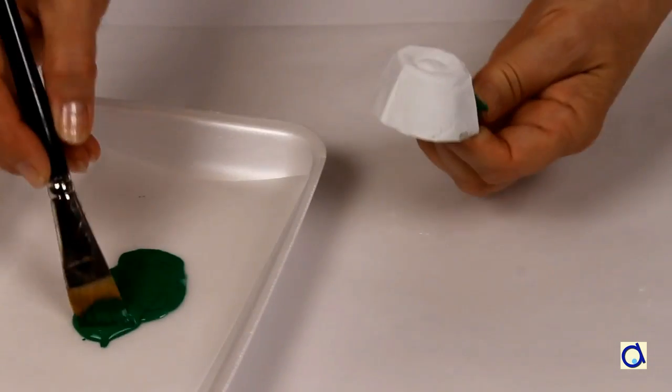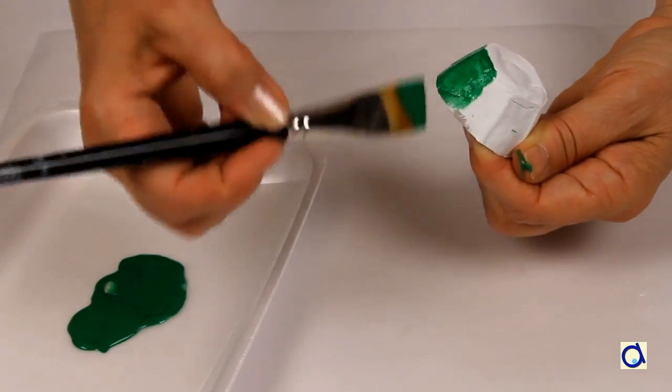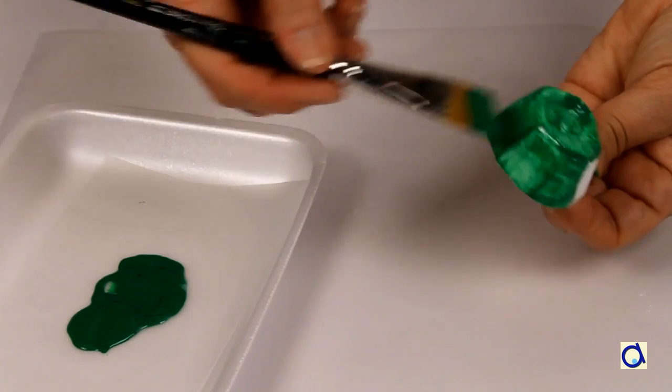When the white paint is dry, paint the whole body of the turtle in green. You might have to add a second coat of green paint to achieve a uniform color everywhere.